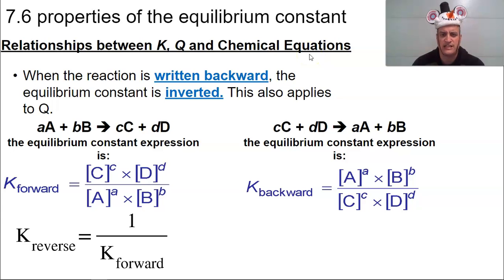Okay, so this is making all these connections that are going to be super helpful when you're trying to do these calculations and these properties. So when the reaction is written backwards, i.e. what we call the reactants become the products, that means the equilibrium constant is inverted. This also applies to Q.